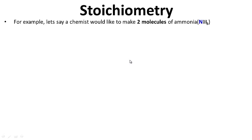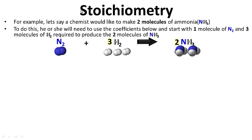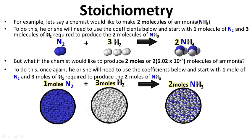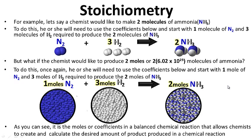For example, let's say a chemist would like to make two molecules of ammonia. To do this, he or she will need to use the coefficients and start with one molecule of N2 and three molecules of H2 to make two molecules of NH3. Similarly, one mole of N2 and three moles of H2 make two moles of ammonia. The moles or coefficients in a balanced chemical reaction allow chemists to calculate the desired amount of product.